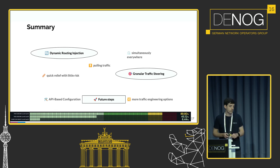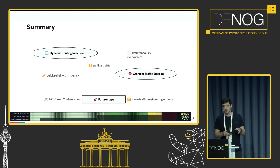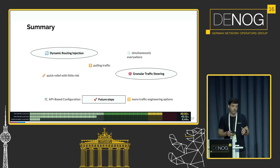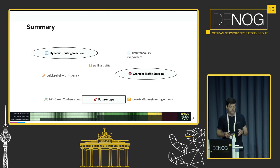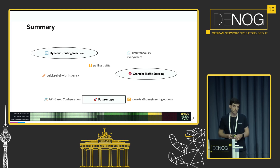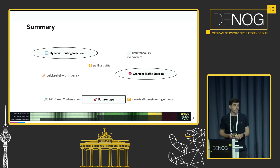Our next steps are to implement a better way to configure this. Currently it's the config map approach, which is neat and fast, but we would like to have an API-driven way to configure this, because that would allow us to also automate the logic — not only the implementation of this shifting. And of course, what I showed you is just one specific option to traffic engineer. We also have several other ideas that we want to implement in a similar way, not only more specifics to overflow providers.